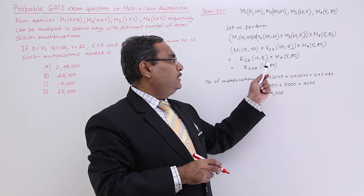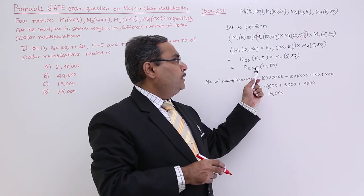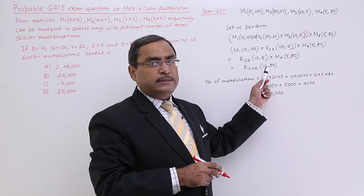If we go for the multiplication, it will be R1,2,3, 10, 80. So, that is the multiplication.